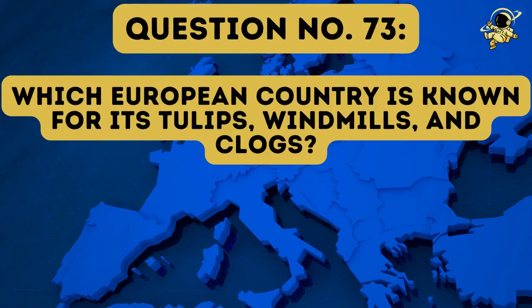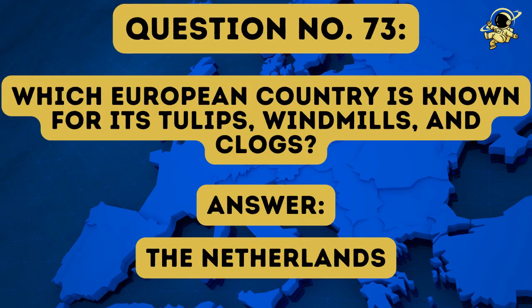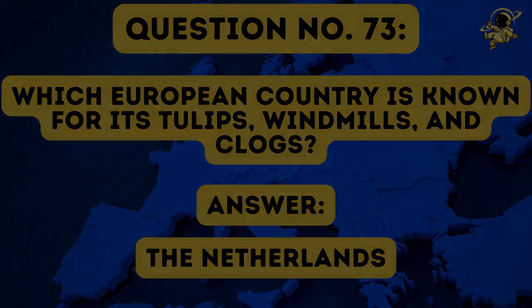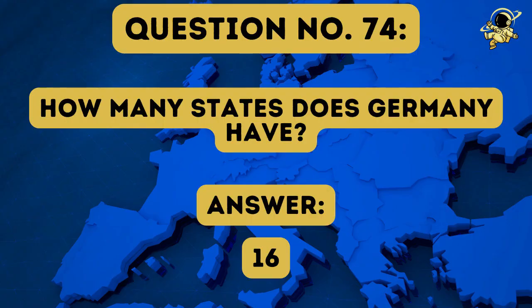Question number seventy-three: Which European country is known for its tulips, windmills and clocks? And if you listened carefully at the beginning of the game, you will know that the answer to question number seventy-three is the Netherlands. Question number seventy-four: How many states does Germany have? And the answer to question number seventy-four is sixteen — sixteen since reunification.